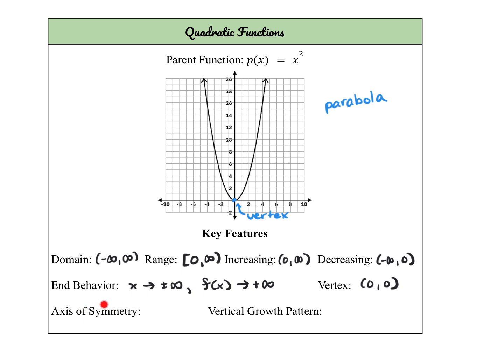Now parabolas have what is called an axis of symmetry. You might have noticed that if I folded my graph on the y-axis right here, this half of the graph would match this half because it's symmetrical over that line. So we have an axis of symmetry, which is a vertical line that will always go through our vertex. For our parent function, it's x equals 0, but it's always going to go through the x value of our vertex. Since it's a vertical line, we write the equation like this: x equals.